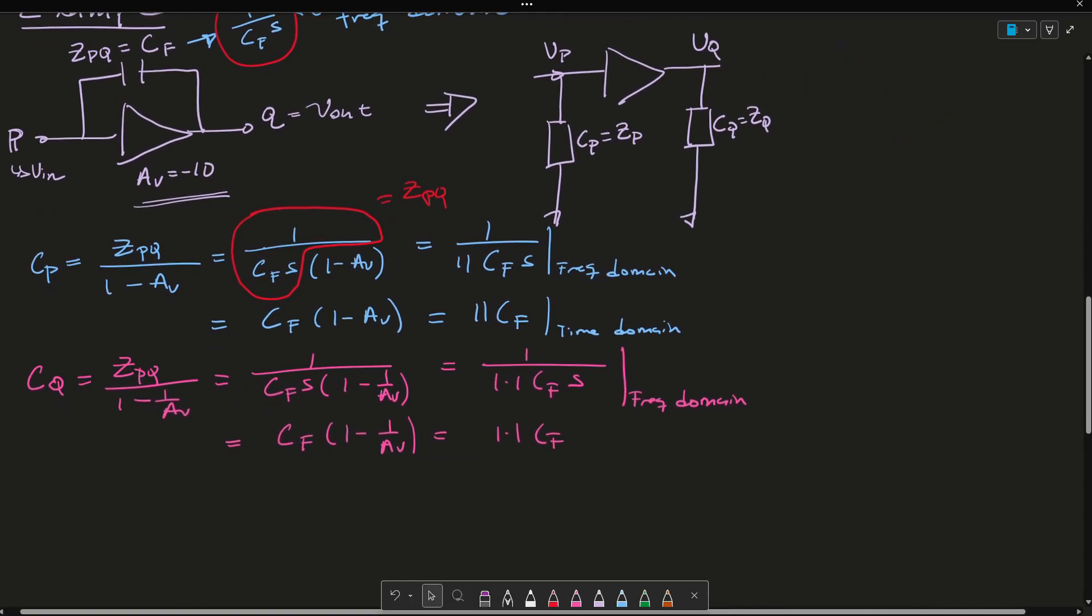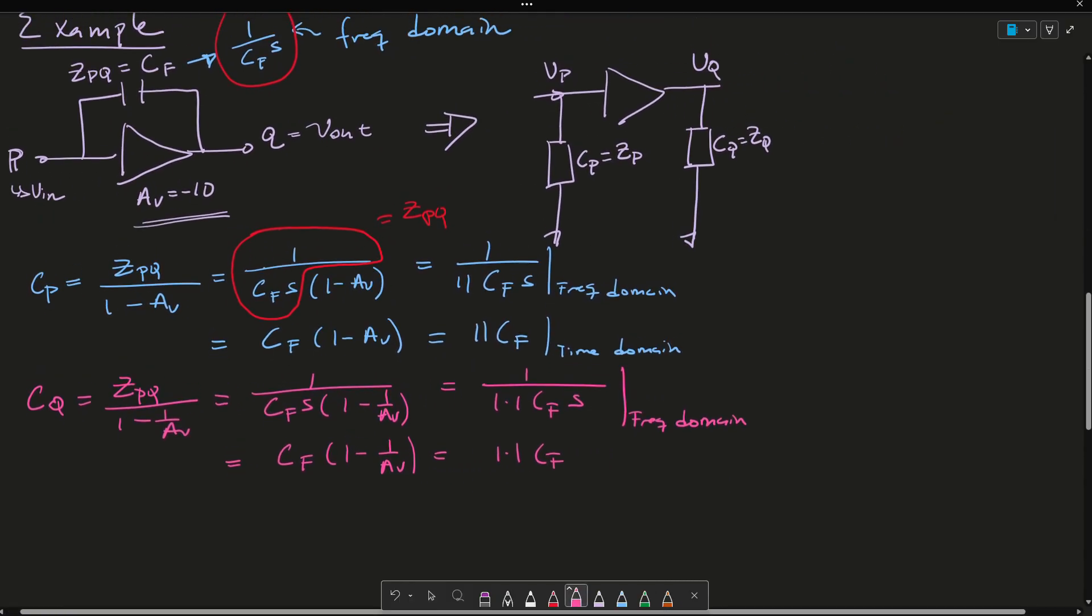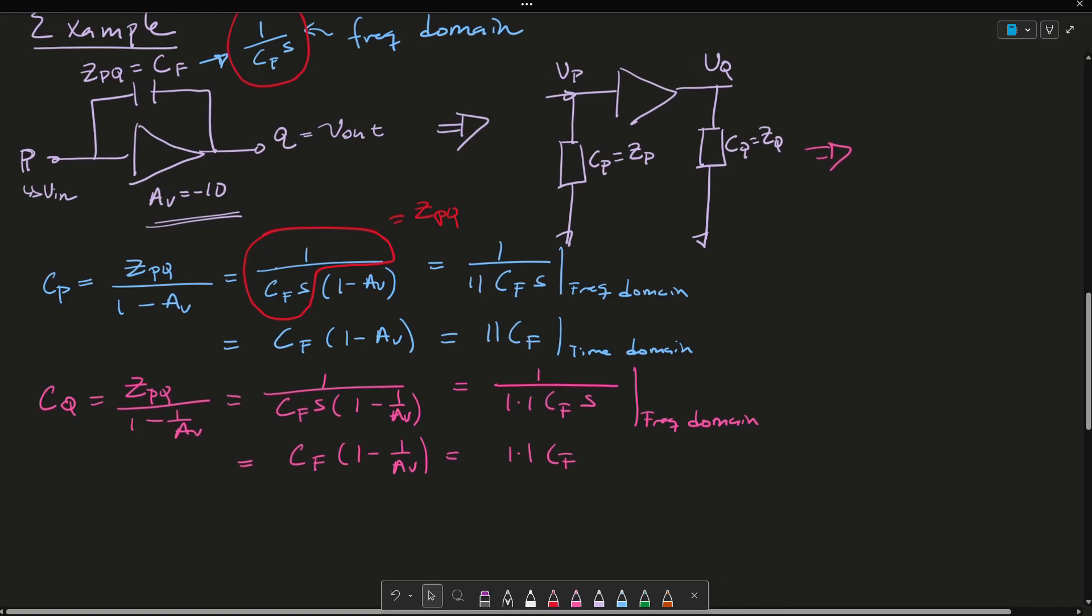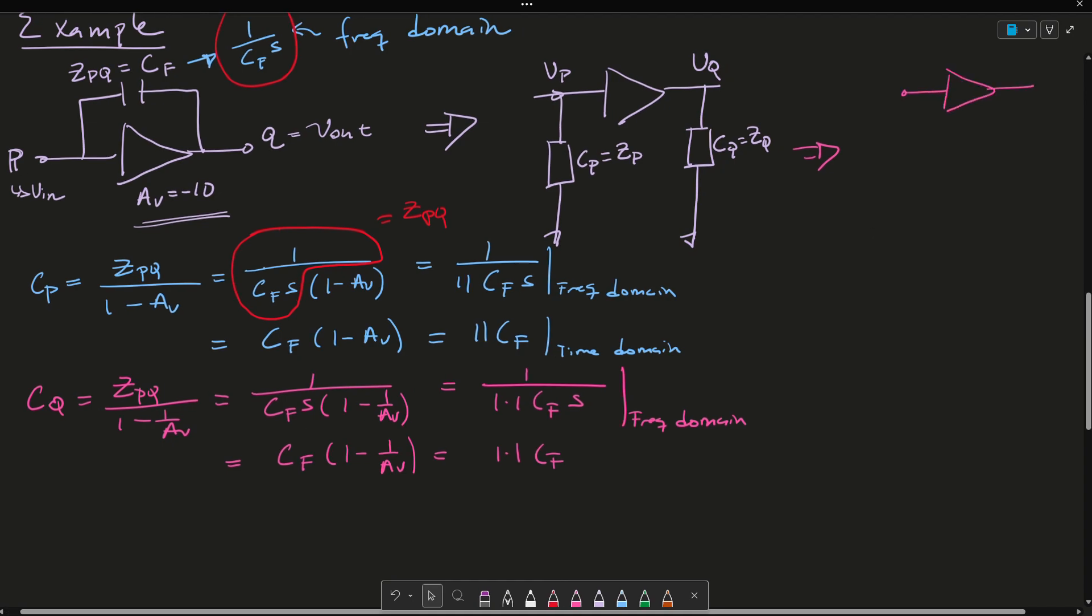So in general, what can we say? We can say that due to Miller's theorem, the Miller effect on a feedback capacitance, we can conclude to be this amplifier A equals minus 10, where this capacitance here is CF, my feedback capacitance times 1 minus AV, and this here is 1 minus 1 over AV times my feedback capacitance. And this here is ZP and this here is ZQ.